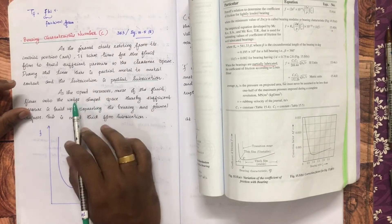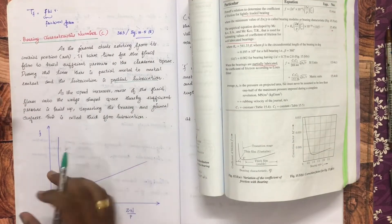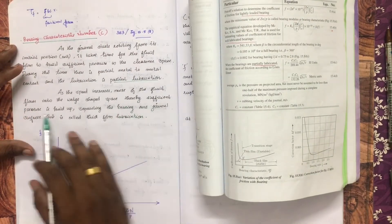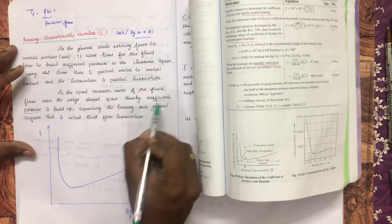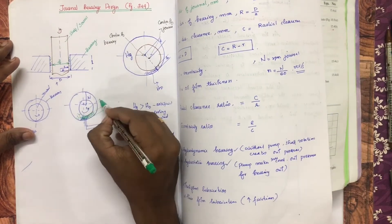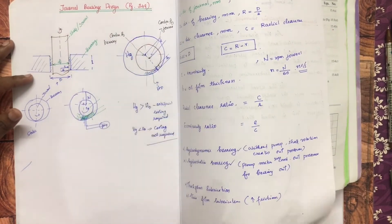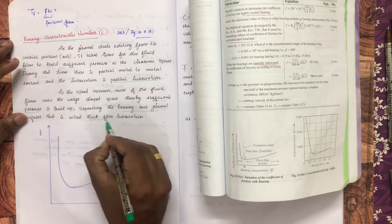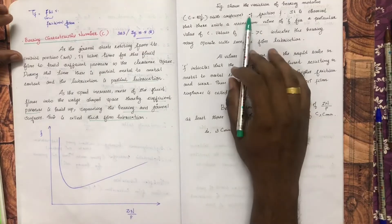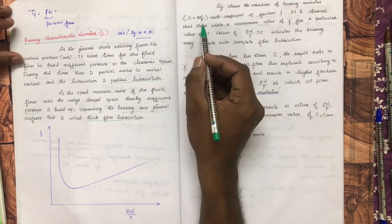As the speed increases, more fluid flows into the wedge-shaped space, thereby building sufficient pressure, separating the bearing and the journal. This is called thick film lubrication.